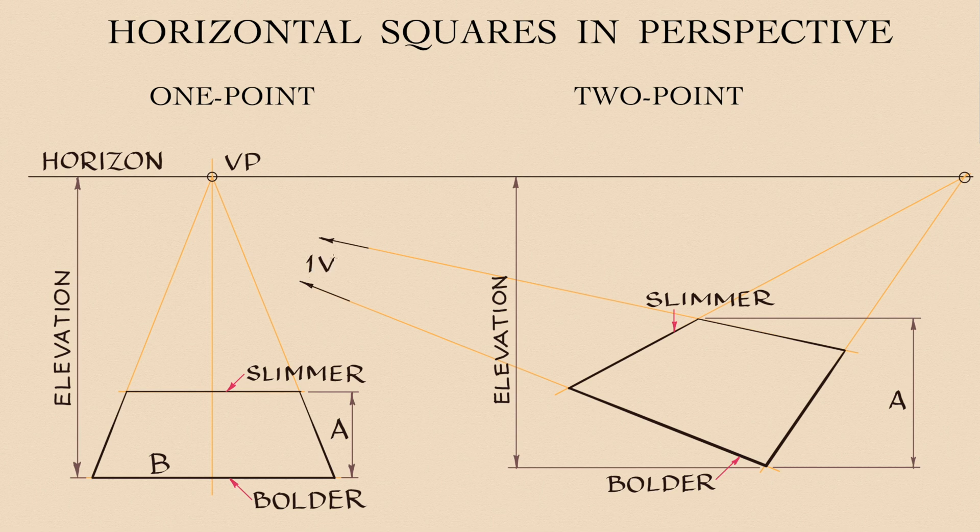Two vanishing lines are pointing to the left. They will converge into one vanishing point that is on the horizon. The second vanishing point is also located on the horizon level.